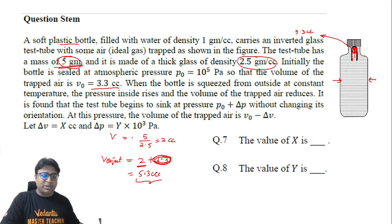That should be equal to 0.3 cc. Now that volume has been represented by X here, so the value of X should be 0.3. Now to know the value of the extra pressure that we have exerted, we are going to use the condition of isothermal process on the trapped air. So the initial pressure was p₀, which is 10 raised to power 5, the initial volume was 3.3.